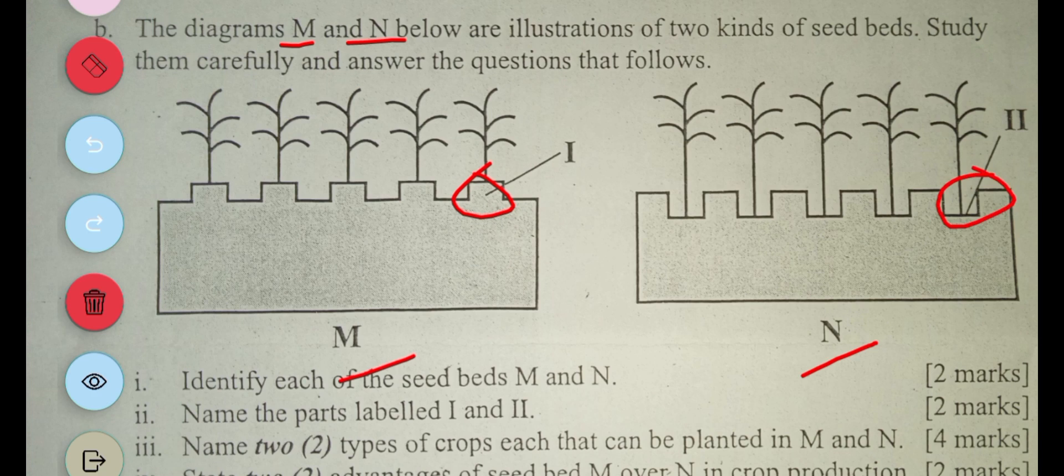Then part three says: name two types of crops each that can be planted in M and N. So two crops that can be planted on M, which is a raised bed, are carrots and also onion. Then with the sunken bed, we have tomato and then pepper.